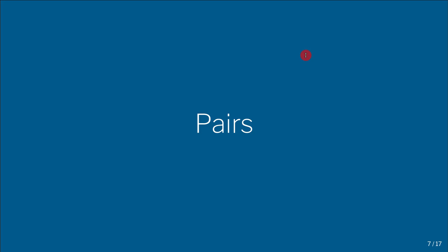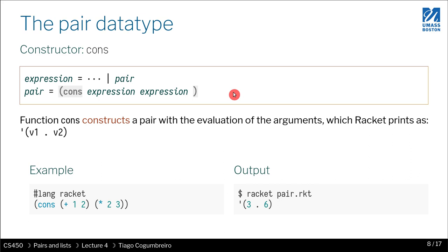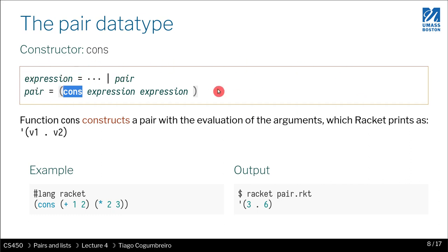Racket has a way to define data structures as pairs. The constructor is called CONS, which is short for 'construct a pair.' It takes two expressions as parameters. You can think of CONS as a regular function — you don't need to think of it as a primitive construct. Unlike OR, for instance, which is not a function, CONS behaves like a regular function.